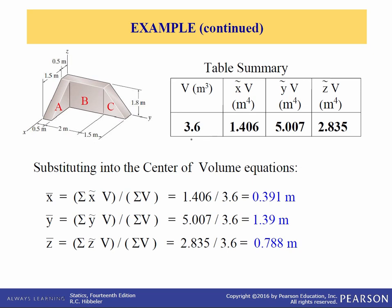Here is a summary of that table. To find the center of volume, we use our center of volume equations: summation of all x-tildes times volumes, which is 1.406, divided by the total volume 3.6, gives x-bar = 0.391 meters. Likewise, y-bar = 1.39 and z-bar = 0.788 meters.